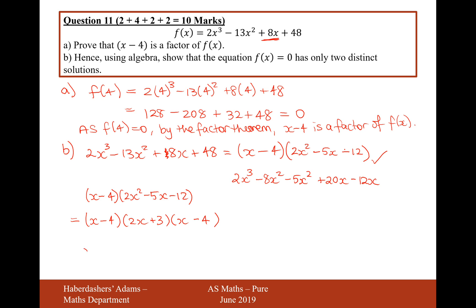You can see here I've now got two distinct solutions. x equals 4 and x equals minus 3 over 2. So, the 4 is a repeated route and minus 3 over 2 is the other route. Two distinct routes, two different routes to this equation here.